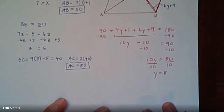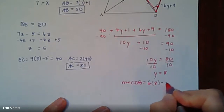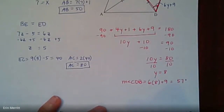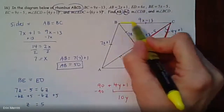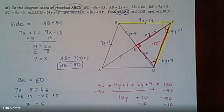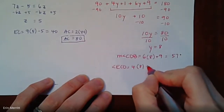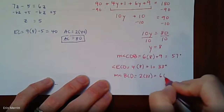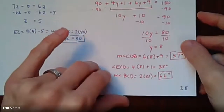With y = 8, angle CDB = 6(8) + 9 = 57 degrees. For angle BCD, first find half of it: angle ECD = 4(8) + 1 = 33 degrees. Since the diagonal bisects the angle, the full angle BCD is double that — 66 degrees. Those are the two parts asked for. It's a great question to watch on video because there's a lot of work involved.